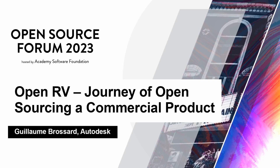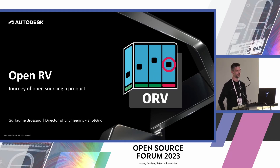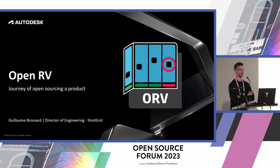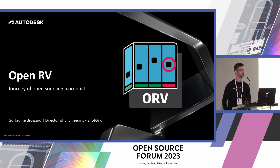My name is Guillaume Brassard. I'm a director of engineering at Autodesk in charge of the Shotgrid product line. I'm here today to share the experience and learnings we made in our journey to open source a commercial product that is mature and well-established in the field, namely called RV, under the umbrella of the Academy Software Foundation.